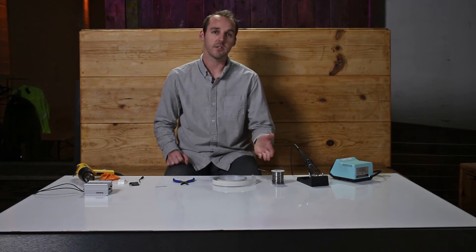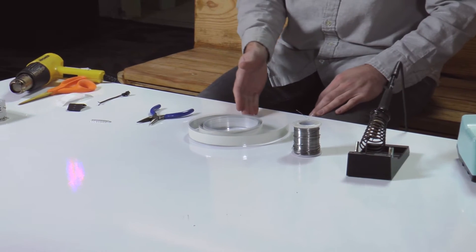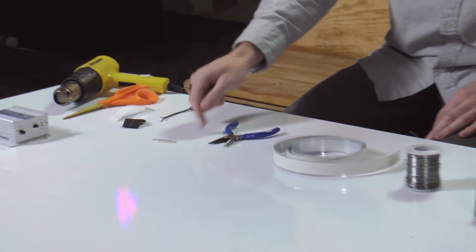To get started, things that you'll need are a soldering iron and solder, some split tape, pair of pliers and crimp connectors.